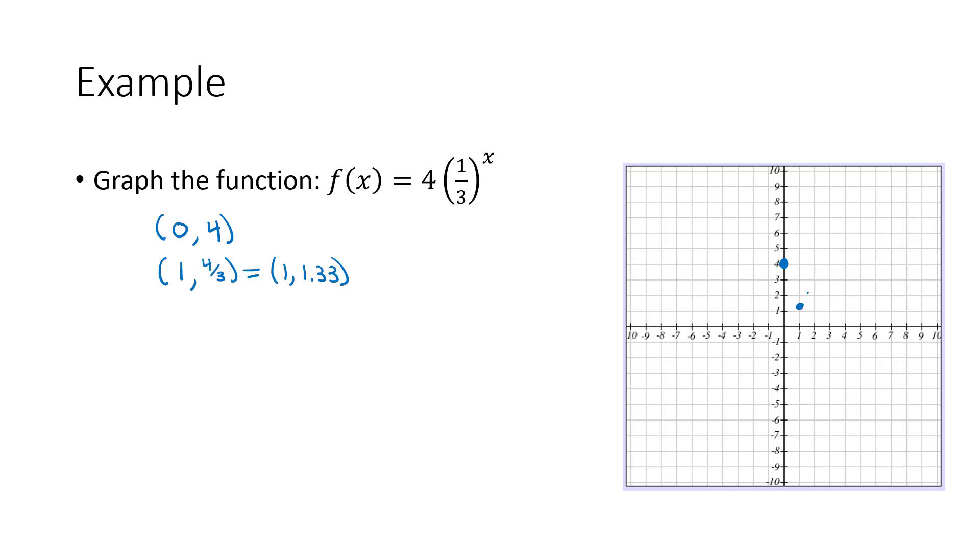So 1 comma 1.33. And then remember, it's going to come in really steep. And then shallow, shallow, shallow. We've got the graph of our exponential function.